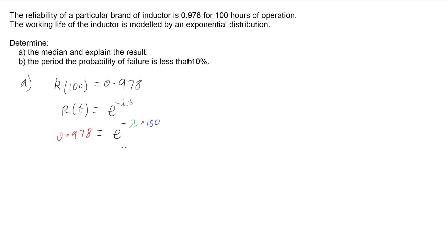So lambda can be worked out. First let's take the log of both sides, that way we can deal with this e. So the natural log of 0.978 is going to leave us with just negative lambda times 100. And so now if I divide that negative 100 off, I'm going to have the natural log of 0.978 divided by negative 100. And so lambda for this scenario is 0.000222. But that doesn't help us work out the median.